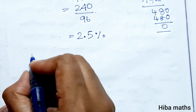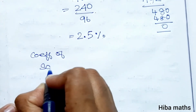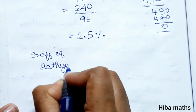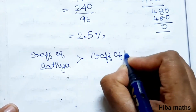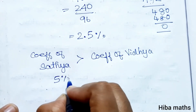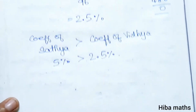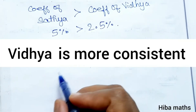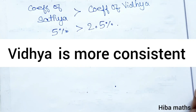Comparing the two: the coefficient of variation of Satya (5%) is greater than the coefficient of variation of Vidya (2.5%). Therefore, Vidya is more consistent. If you have any doubts, please comment in the comment section. Like and thank you so much for watching.